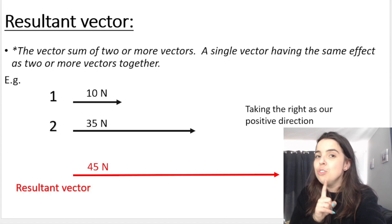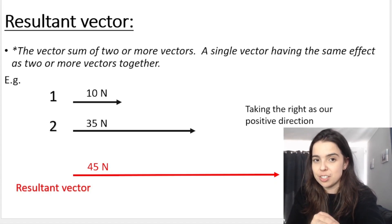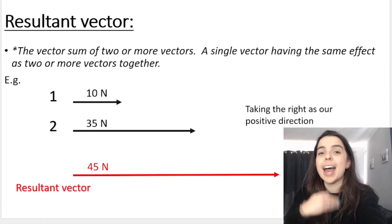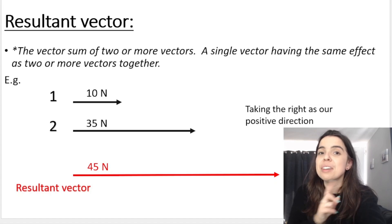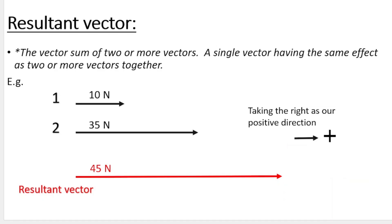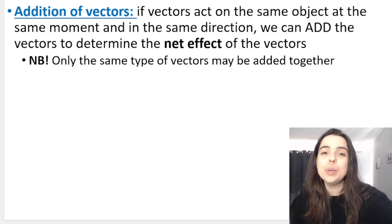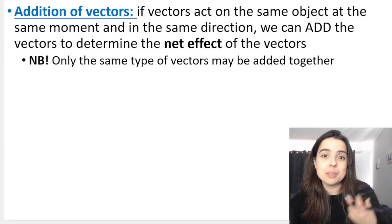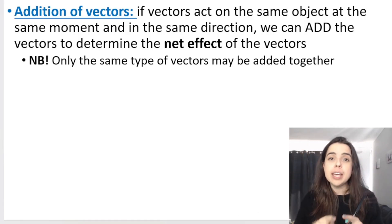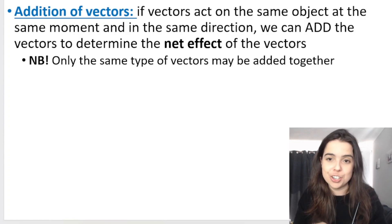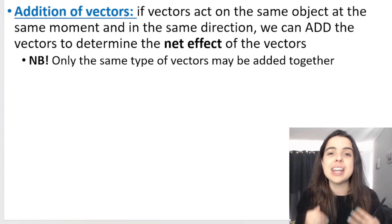It's a different story when the vectors are not pointing in the same direction or if they're acting in opposite directions. We will still apply the same principles — we still add them, it's still a vector sum — but then we need to consider positive and negative directions. Taking to the right as our positive direction, our 10 Newtons is positive, our 35 Newtons is positive. 10 plus 35 equals 45 Newtons. A positive answer means our resultant vector is going to the right.